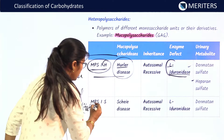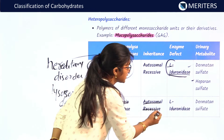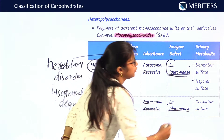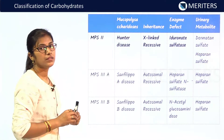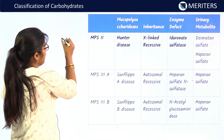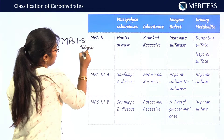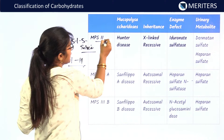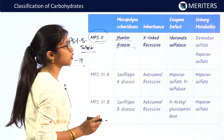MPS1S is Scheie disease. It is also autosomal recessive, with the same enzyme defect — L-iduronidase — but the urinary metabolite is dermatan sulfate only. MPS2 is Hunter disease. Unlike the previous two, it is X-linked recessive. The enzyme defect is iduronate sulfatase, and the urinary metabolites are dermatan sulfate and heparan sulfate.